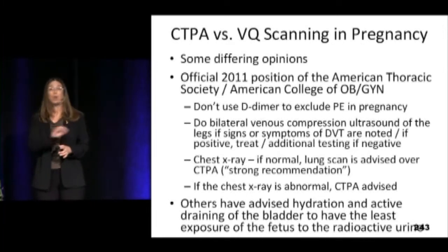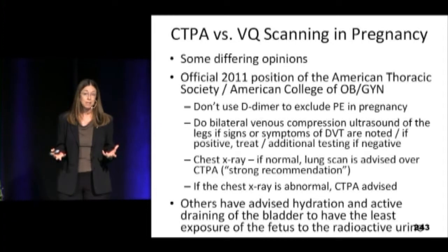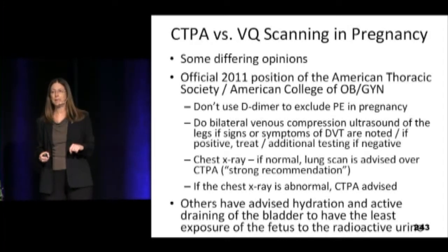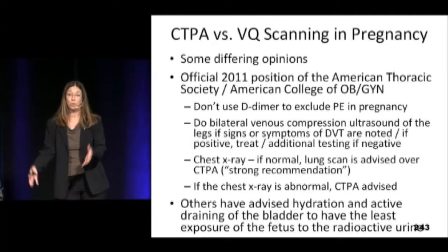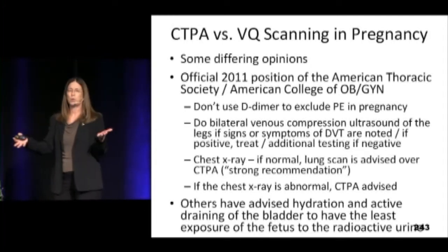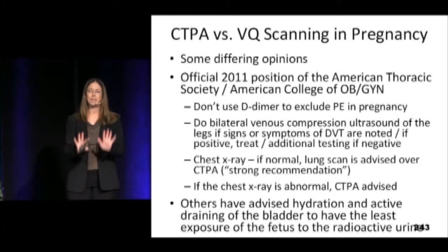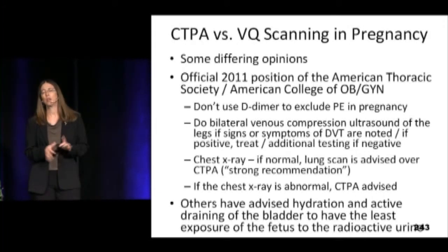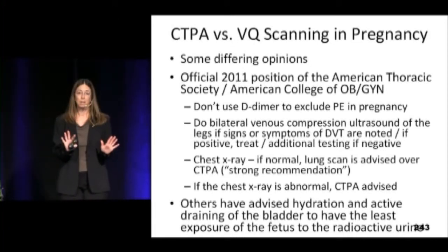What do you do if someone's pregnant? No D-dimers in pregnant women — the American College of Obstetrics and Gynecology says don't do it, because it's going to be false positive too often. If you're worried about a pregnant woman having a PE, the best thing is to start with the legs. Get an ultrasound of both legs — it'll be positive anywhere between 8 and 20% of the time even if there are no leg symptoms. If you find the clot there, you don't need to do anything else. If the leg ultrasound is negative, the current ACOG recommendation is to proceed to CTPA.